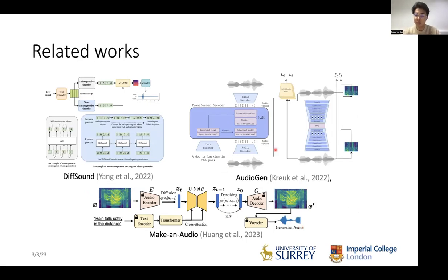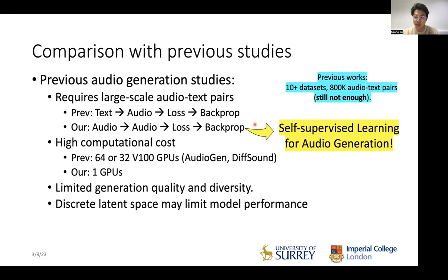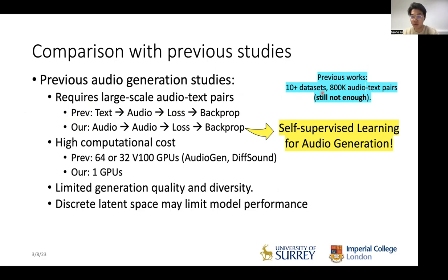Looking at the big picture of these three works, all work on the latent space of a VAE and all require paired text and audio data. This training scheme has limitations: previous methods take text as input, generate audio, calculate a loss function, and do backpropagation — which requires text-audio paired data. Such paired data is very hard to collect because audio labeling is time-consuming and ambiguous. Previous work generally has around 800k data points, which is not a very large-scale training dataset.